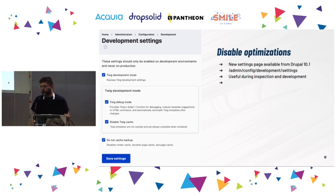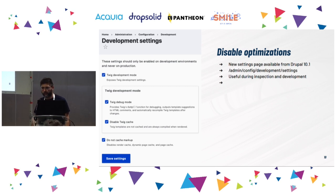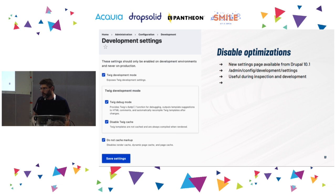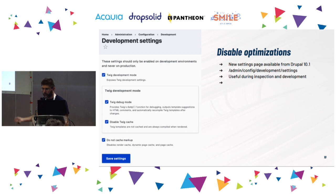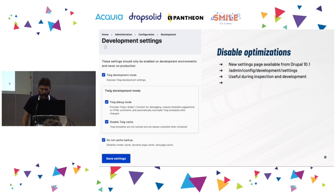First of all, because we are trying to analyze the system, we probably want to disable the optimizations that Drupal has out of the box, so we can reload the same page without receiving a response from some cache system and speed up our inspection. From Drupal 10.1, this is quite simple. You can go to the admin slash config slash development slash settings page and disable the markup cache, enable Twig debug, disable the Twig cache, and so on. Just remember to turn them back on when you are in production.